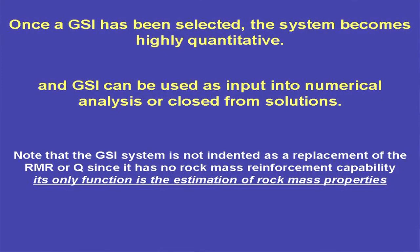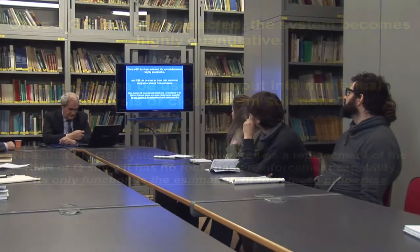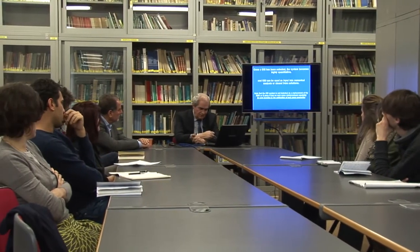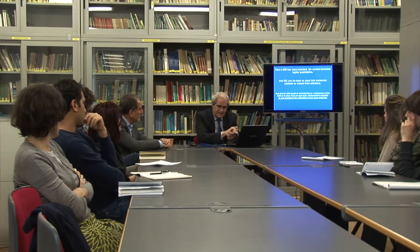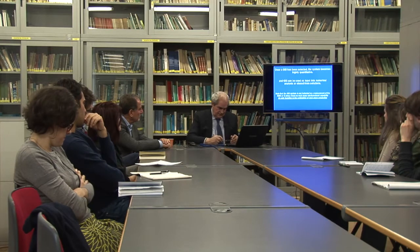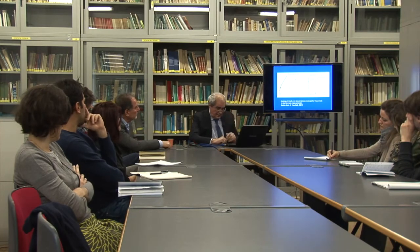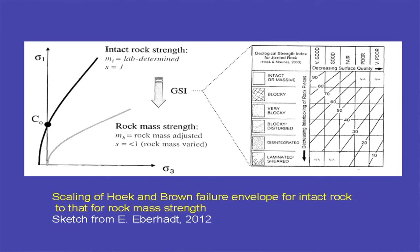Once GSI has been selected, the system becomes highly quantitative. GSI can be used as input into numerical analysis or closed-form solutions. I repeat again that GSI is not intended as a replacement for RMR or Q, since it has no rock mass reinforcement capability. Its only function is the estimation of rock mass properties — to move from the intact rock strength to the rock mass strength.